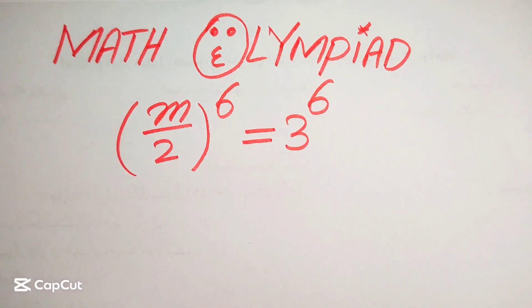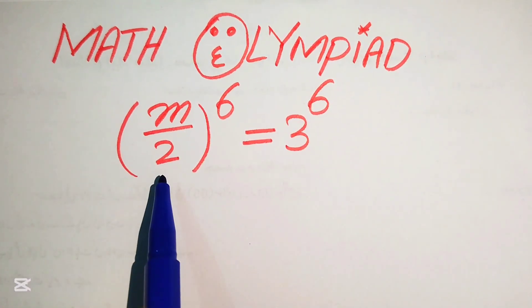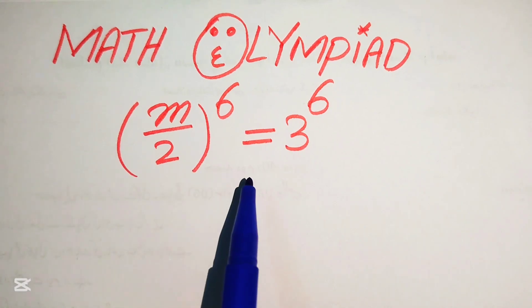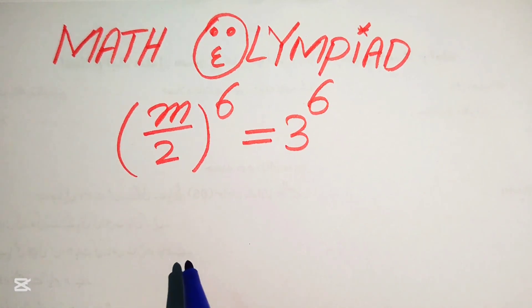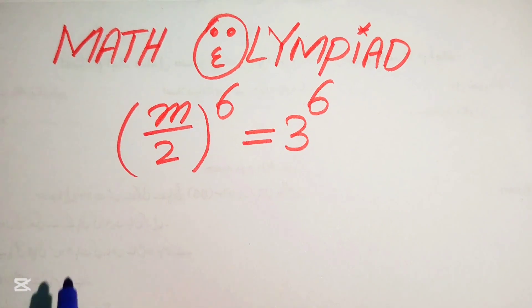Hello everyone, welcome to solve this nice math Olympiad algebra problem. Here we have m over 2 to the power of 6 equals to 3 to the power of 6, and we solve this problem for the values of m.